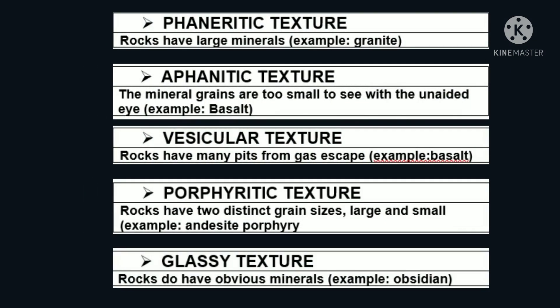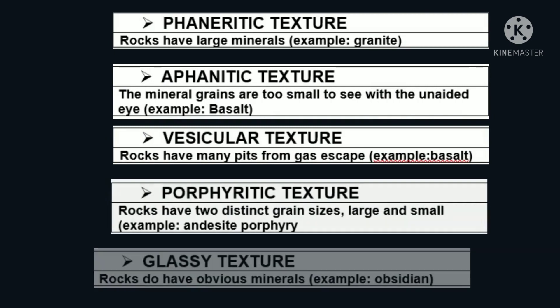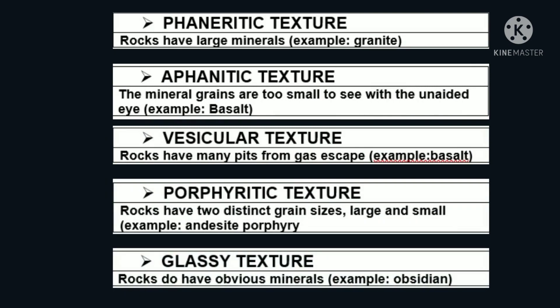What are the types of igneous rocks based on texture? Igneous rocks have different textures. Texture of rock is the size and arrangement of the minerals it contains. Ang apat na types ng igneous rocks based on texture ay: phaneritic texture — rocks have large minerals, example: granite; aphanitic texture — the mineral grains are too small to see with the unaided eye, example: basalt; vesicular texture — rocks have many pits from gas escape, example: basalt; porphyritic texture — rocks have two distinct grain sizes, large and small, example: porphyry; and glassy texture, example: obsidian.